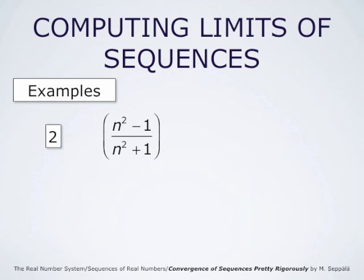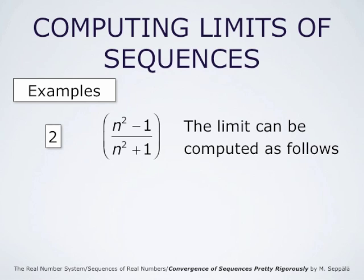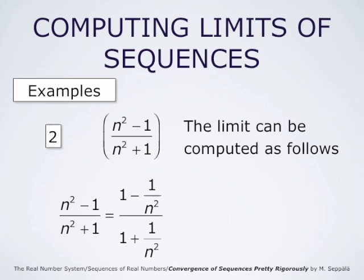For the sequence (n² minus 1) divided by (n² plus 1), the limit computation using direct substitution leads to infinity divided by infinity, which is undefined. Here we need a rewriting. We divide both the numerator and denominator by the highest power of n appearing in the expression, which is n². So n² minus 1 becomes 1 minus 1/n², and n² plus 1 becomes 1 plus 1/n². As n grows towards infinity, 1/n² approaches 0, so the limit is (1 minus 0) divided by (1 plus 0), which is just 1.